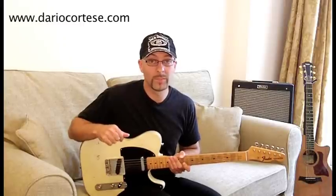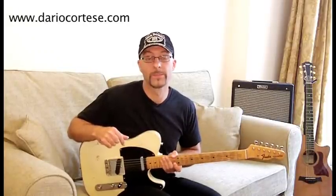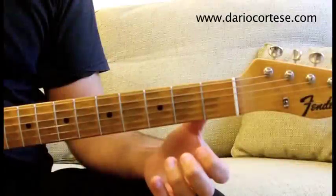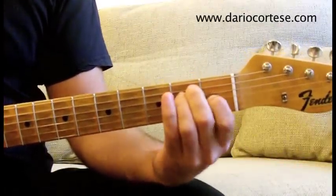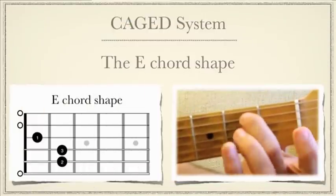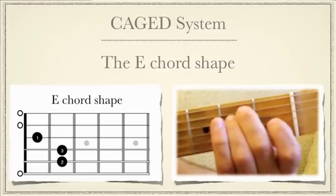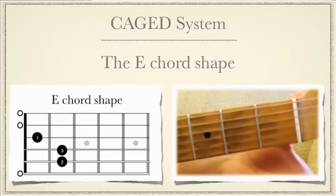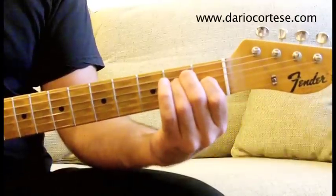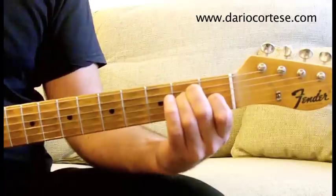These five chords are very important because they're all movable, which means that we can move them anywhere on the fretboard. Let me give you an example. Let's play an E chord. I'm playing the bottom E open, A string on the second fret, D string on the second fret, G string on the first fret, open B string and open top E. Now keep this shape in mind, including the open strings involved, because if I want to move it, I have to move all strings involved.